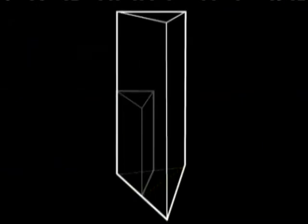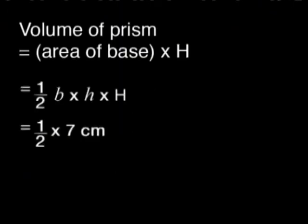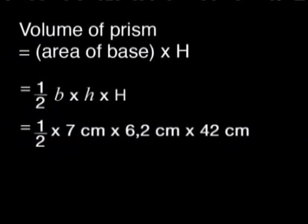I would have to double the base here, the perpendicular height here, and the height of the box. Volume is area of base times height. So we get half times seven centimeters times 6.2 centimeters times 42 centimeters. That is 911.4 cubic centimeters. Does that look like 8 times more than 114 centimeters cubed?